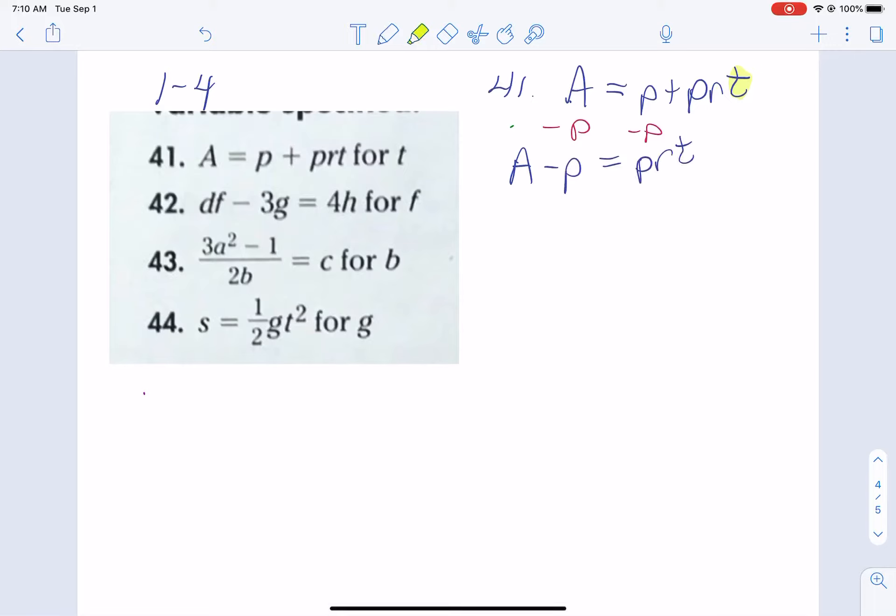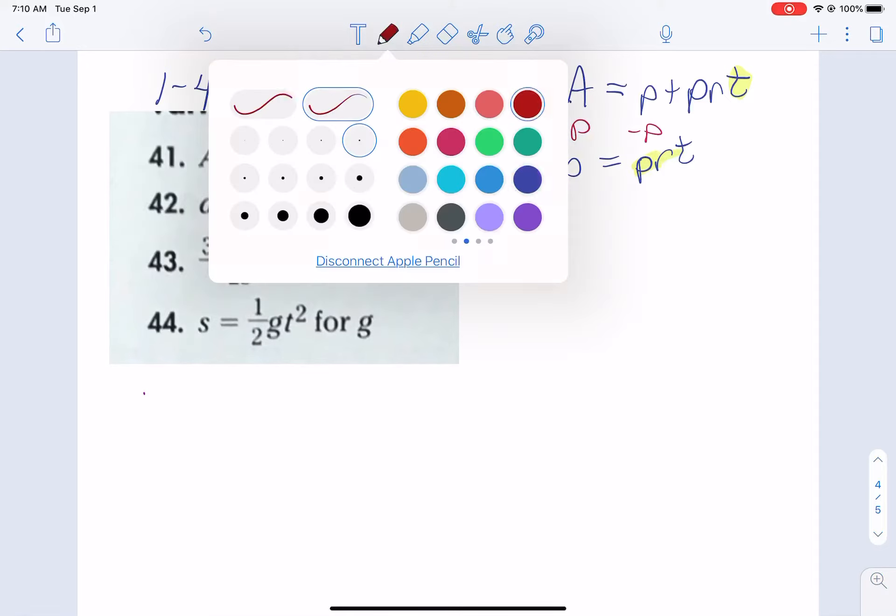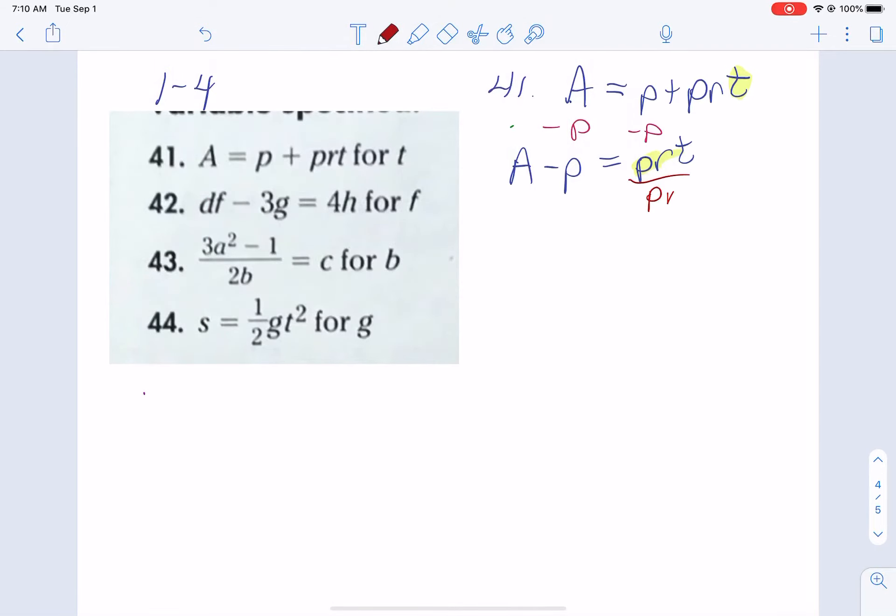Now, let's think about these numbers here. These numbers here, P and R, are going to be multiplied by T. So what do we do there? Well, we're going to divide by PR. And now you'll notice that we've got the T completely by itself. A minus P all divided by PR.